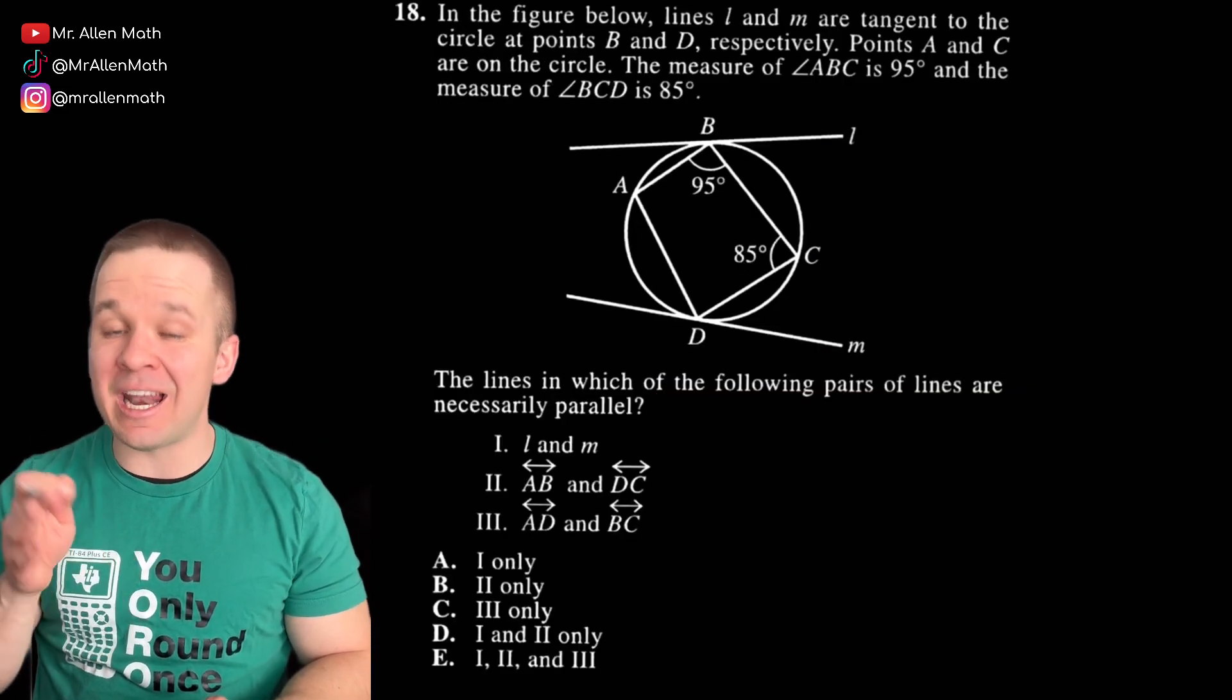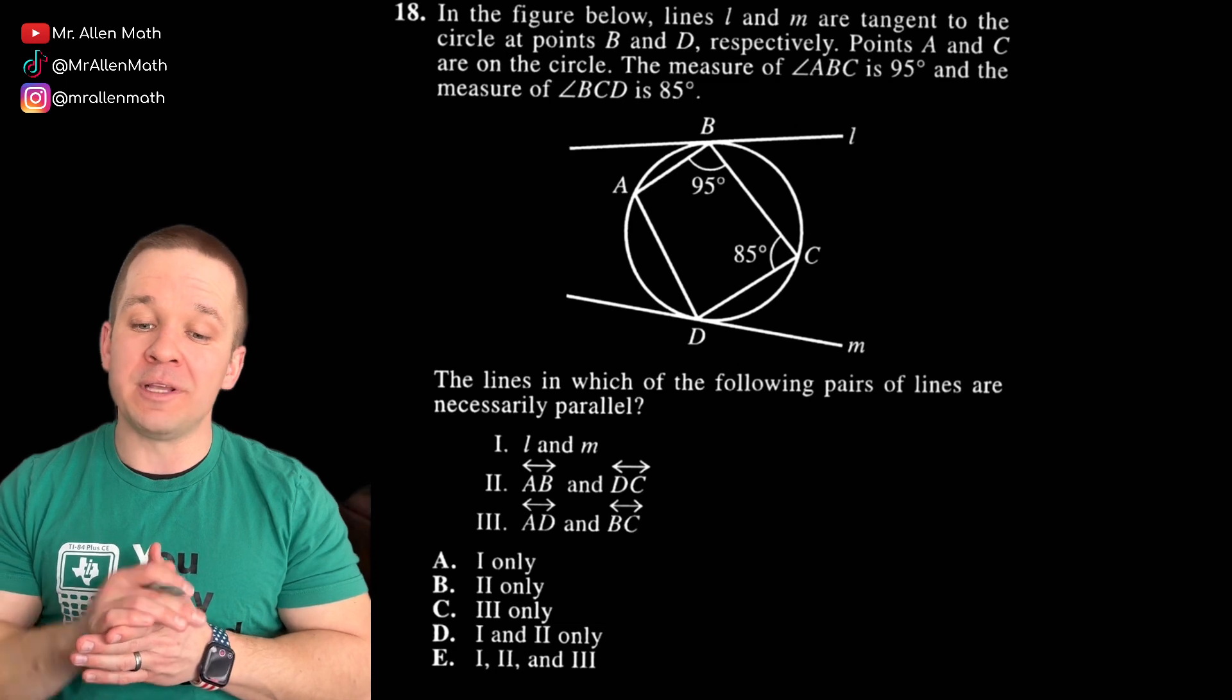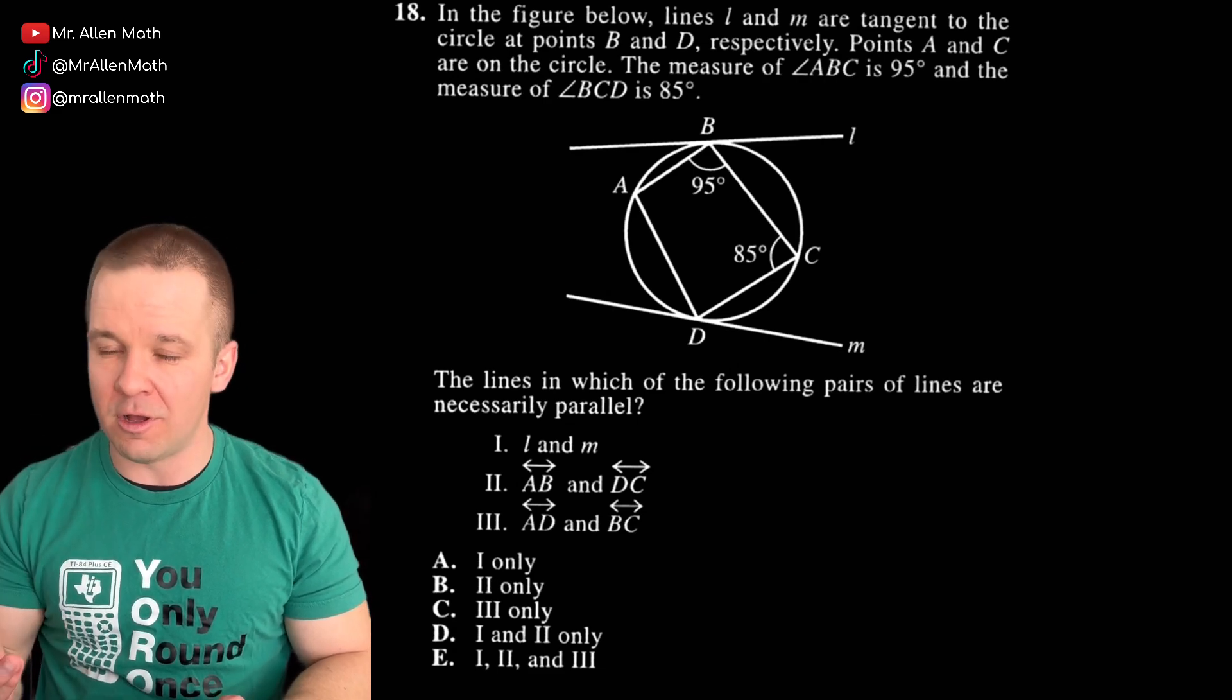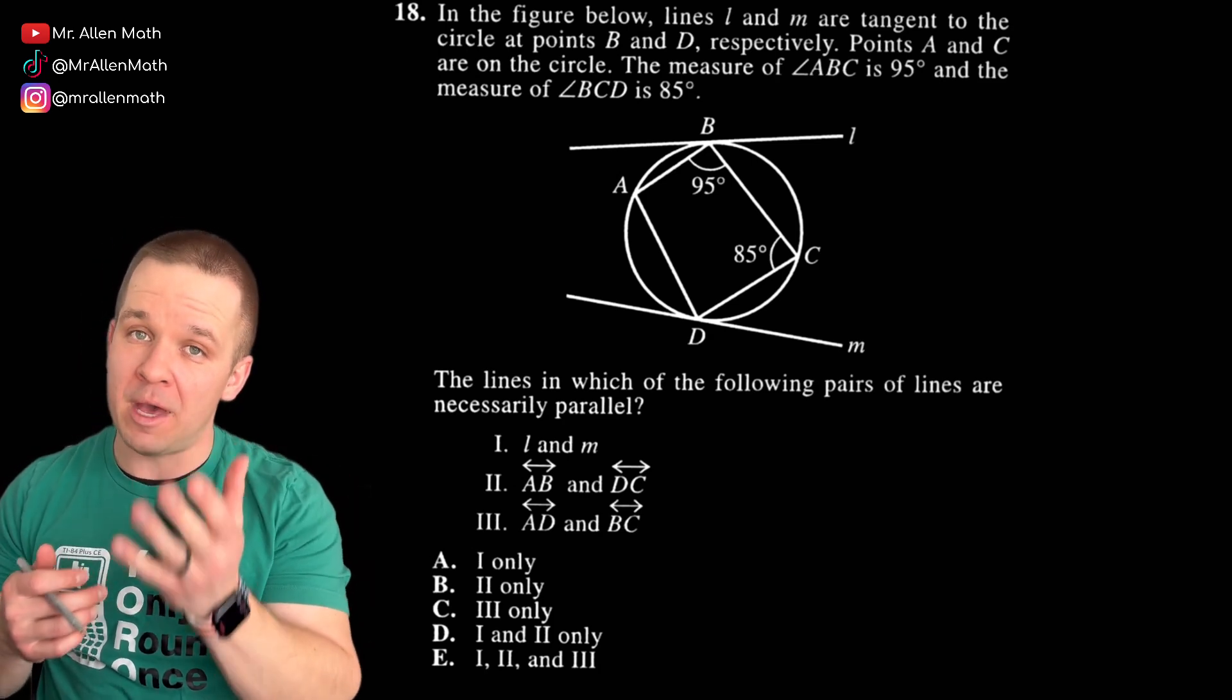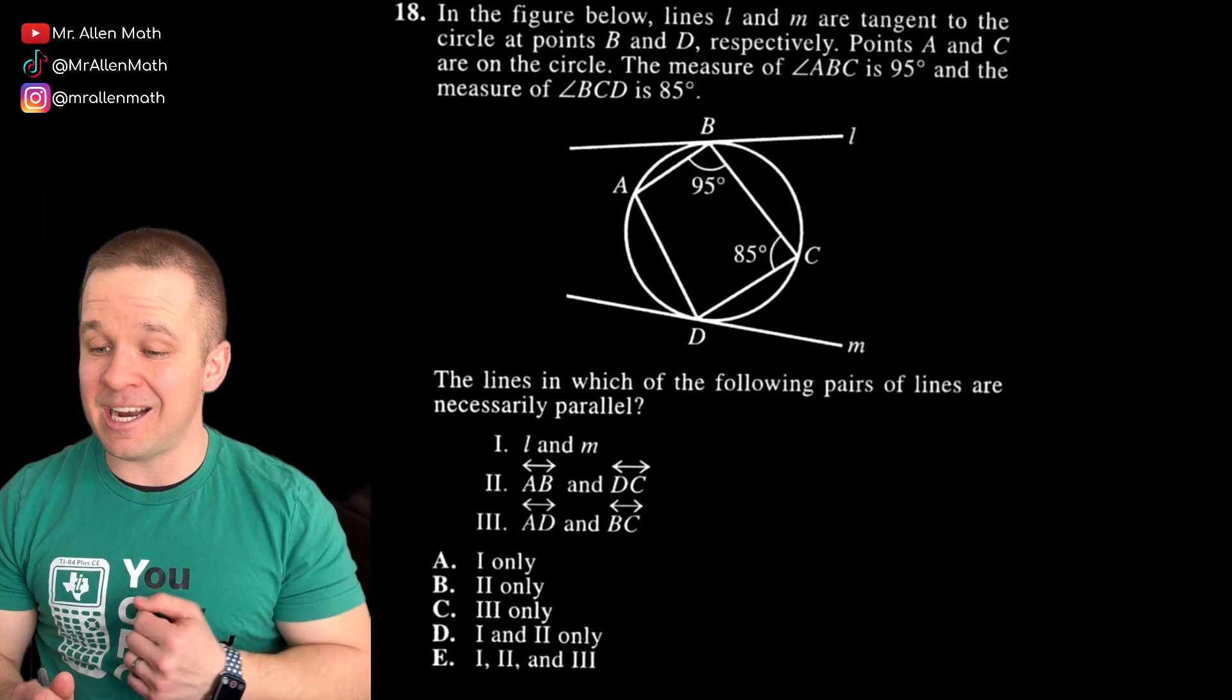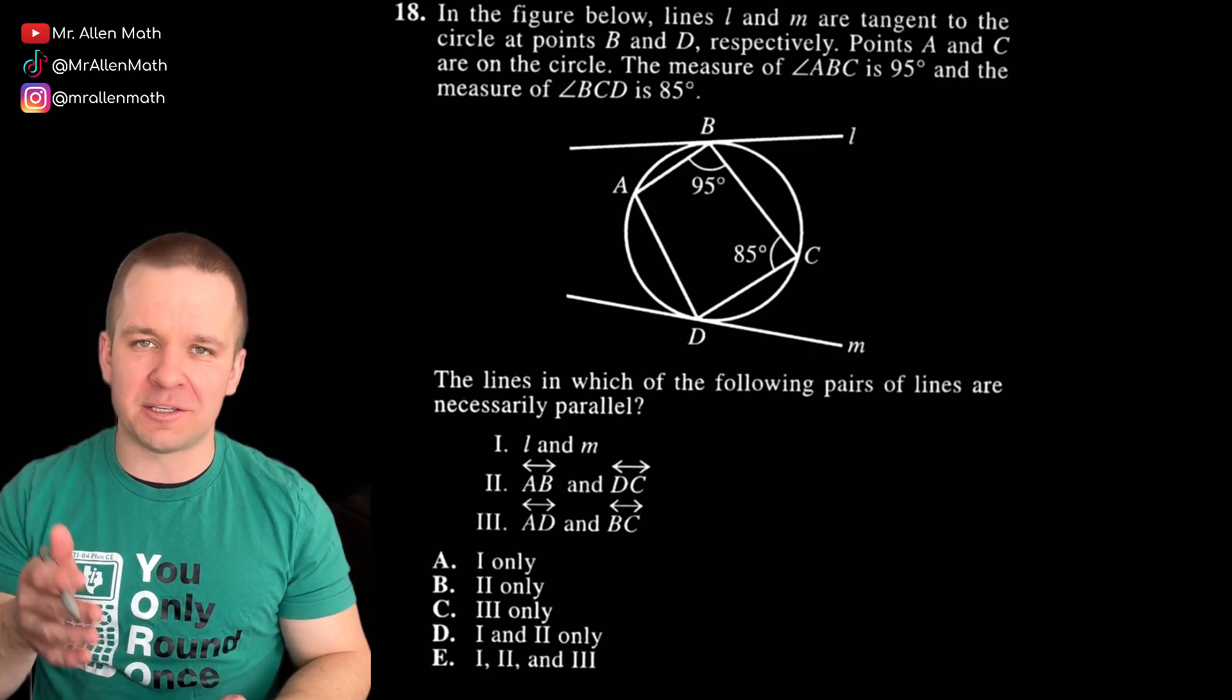So maybe you'll remember that exterior angle and the two remote interior angle thing when you get to the test. If not, 180 degrees in a triangle will never fail you. All right. Next one. In the figure below, lines L and M are tangent to the circle at points B and D. Now tangent means that it just touches at that one spot, points B and D. Points A and C are on the circle.